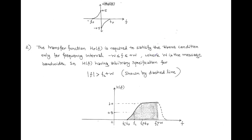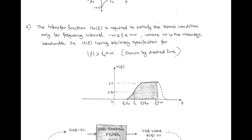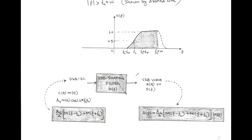The second point is that the transfer function Hv(F) is required to satisfy the odd symmetry property only for the frequency interval between minus W to W, where W is the message bandwidth. So the transfer function of the sideband shaping filter H(F) has some arbitrary specifications for frequencies greater than Fc plus W, as shown by a dashed line. With the help of this specially designed sideband shaping filter, we obtain the vestigial sideband from the double sideband suppressed carrier wave.